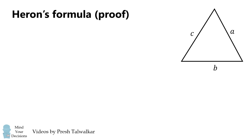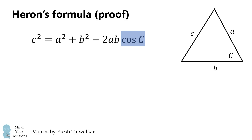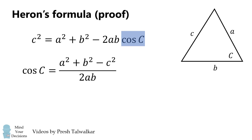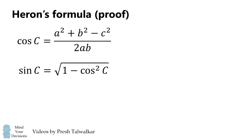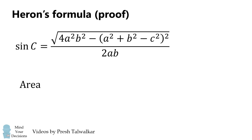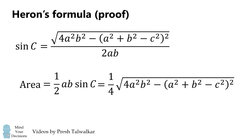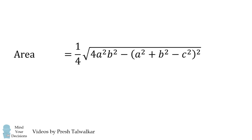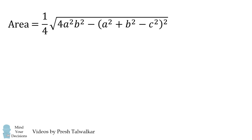I'll now briefly give a proof of Heron's formula. By the law of cosines, C squared equals A squared plus B squared minus 2AB times the cosine of angle C. We solve for the cosine of angle C, then use the identity that the sine of angle C equals the square root of 1 minus cosine squared of angle C. Substituting into the formula for the area of a triangle — which is one-half AB times the sine of angle C — and simplifying gives the foundation for Heron's formula.